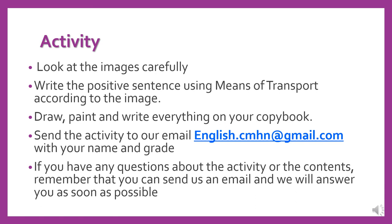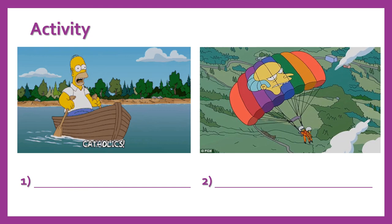Here is the activity. Look at the images carefully. Write the positive sentence using means of transport according to the image. Draw, paint, and write everything on your copybook. Send the activity to our email, english.cmhn@gmail.com, with your name and grade. If you have any questions about the activity or the content, remember that you can send us an email and we will answer you as soon as possible. Take care and stay safe. Bye.